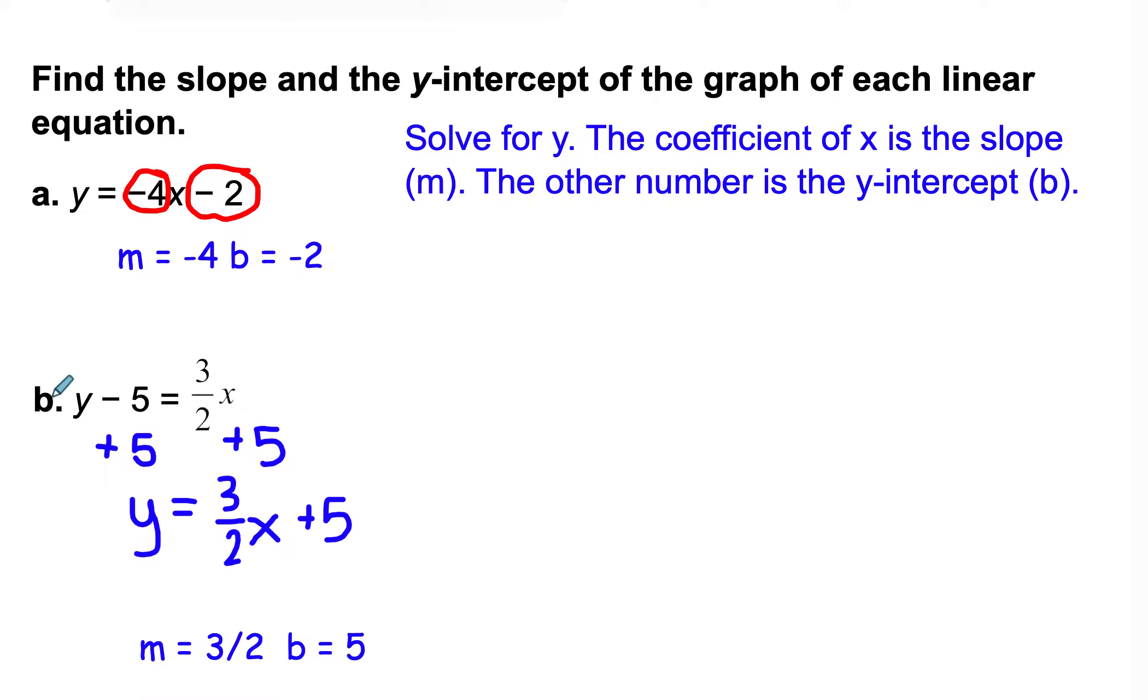For b, it's not in slope-intercept form already because it's got a minus 5 on the side with the y. We have to solve it like we've solved equations before, using order of operations backwards to get rid of anything on the side with the y. This was a minus 5, so I added 5 on both sides. I'm left with just y on that side. Over here, I have 3 halves x plus 5. You want that x term first before your number without the letter. Then I look to see my slope, 3 halves, and my y-intercept, positive 5.